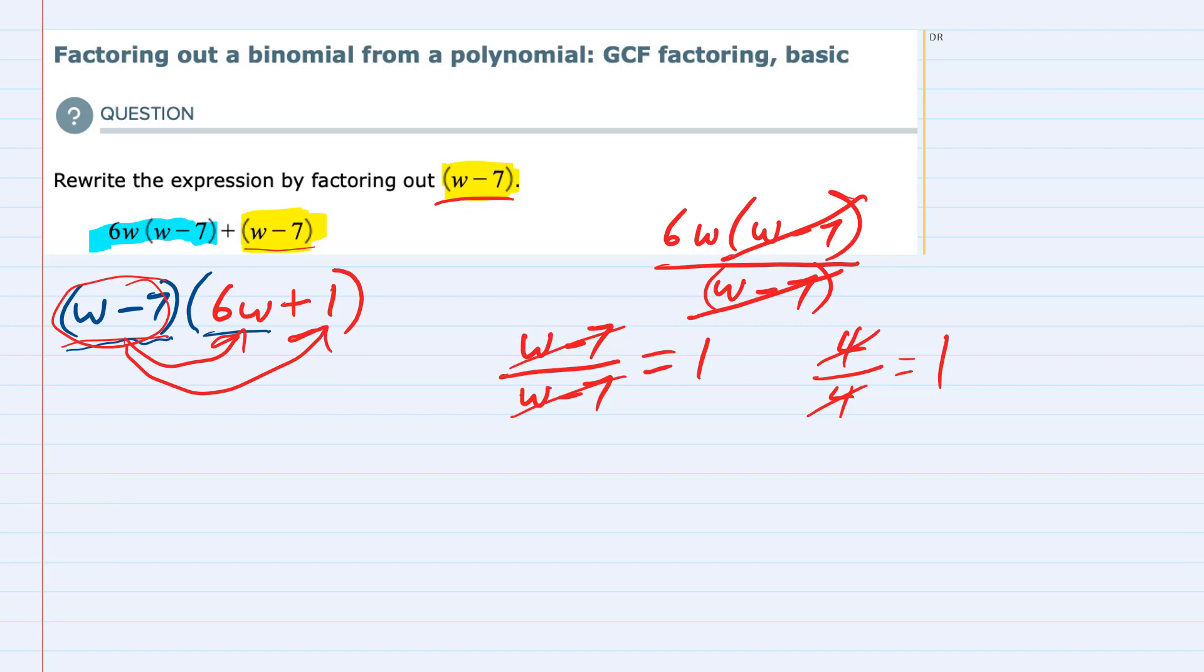And 1 times (w - 7) is going to give us that second term (w - 7). So checking with multiplication, I can see that we have successfully factored out the (w - 7). We're left with a 6w in the first term and the plus 1 in the second term as a placeholder, and that is our factored polynomial.